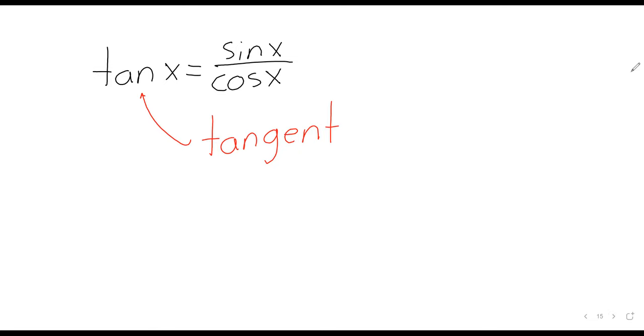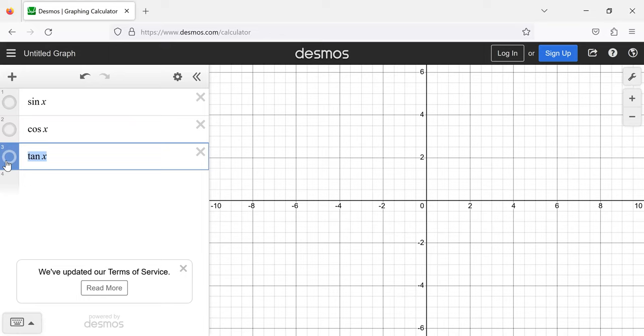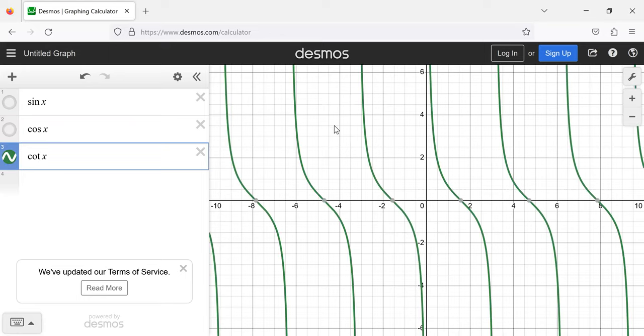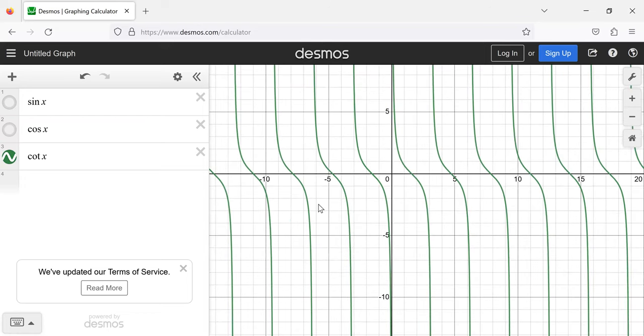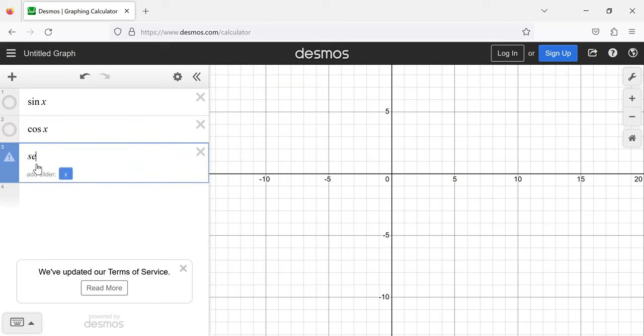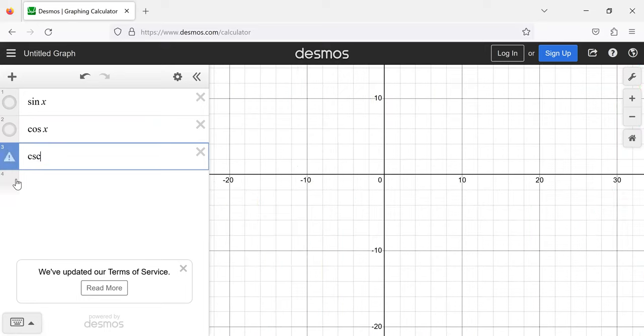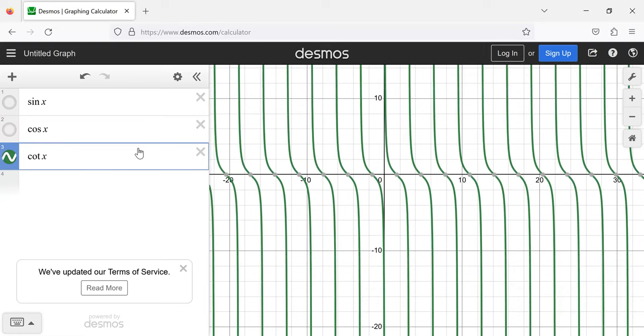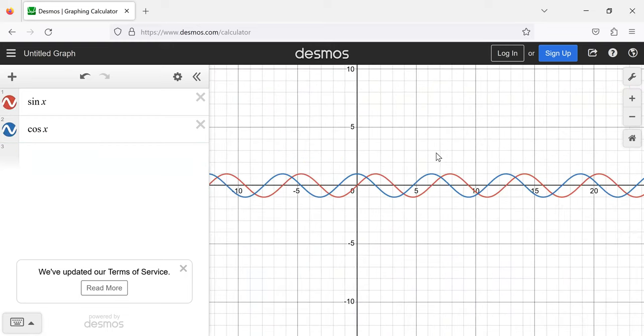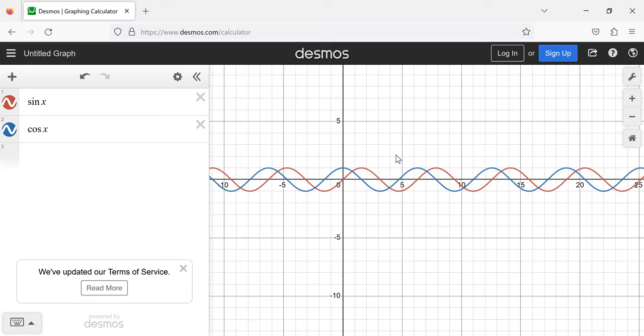I haven't shown the graphs of the other trig functions. You don't really need to know them. But if we look at them real quick, the cotangent has all of these vertical asymptotes. The cosecant has all of these vertical asymptotes. The cosecant has these vertical asymptotes. And the cotangent has these vertical asymptotes. So the sine and the cosine are special in a few ways. They're special because they're defined everywhere, is what I was going to say.